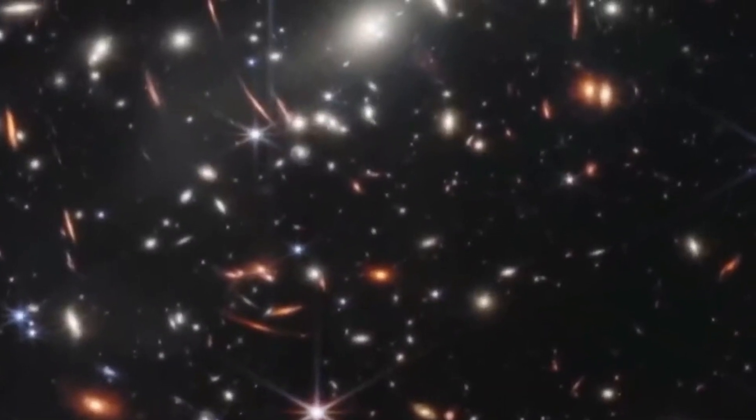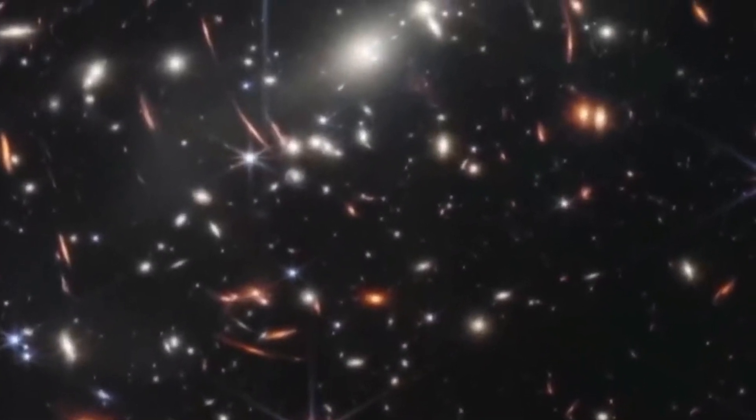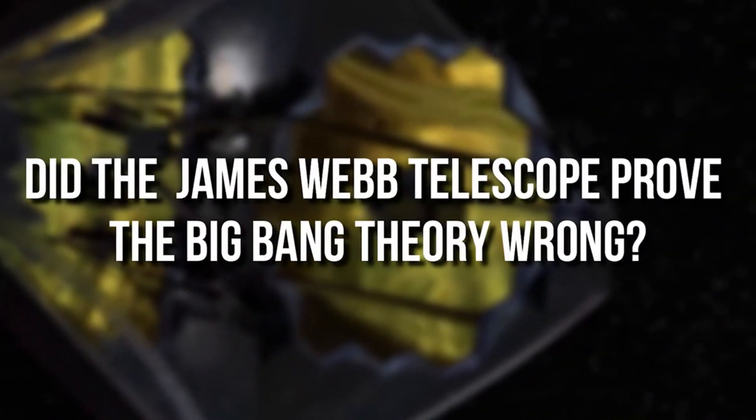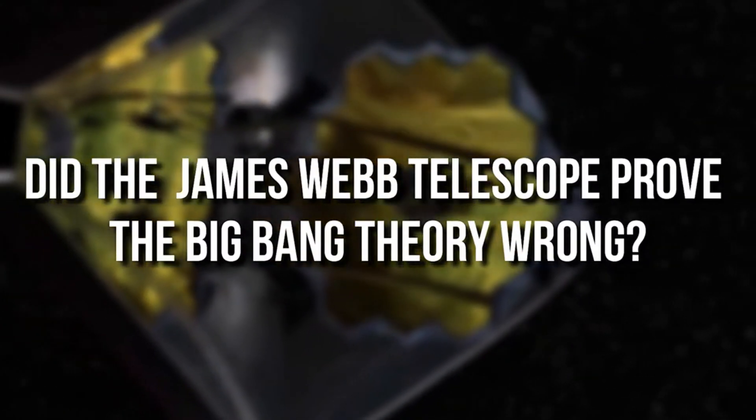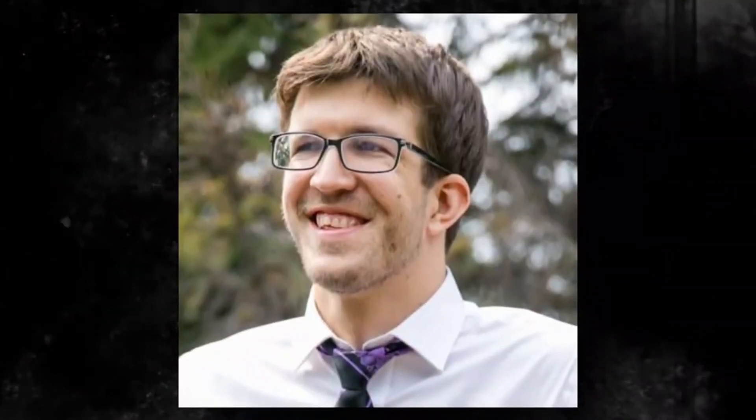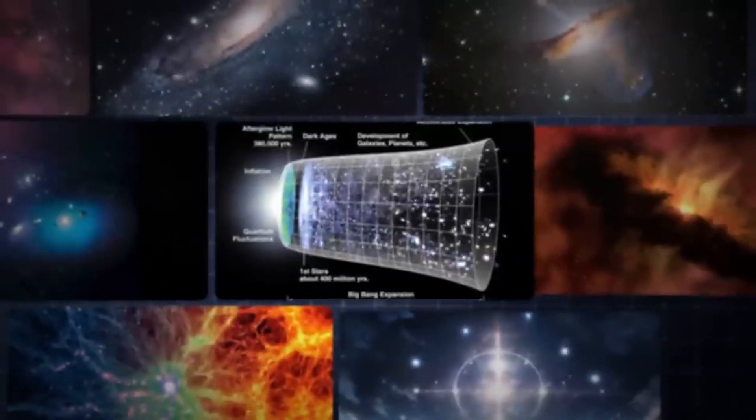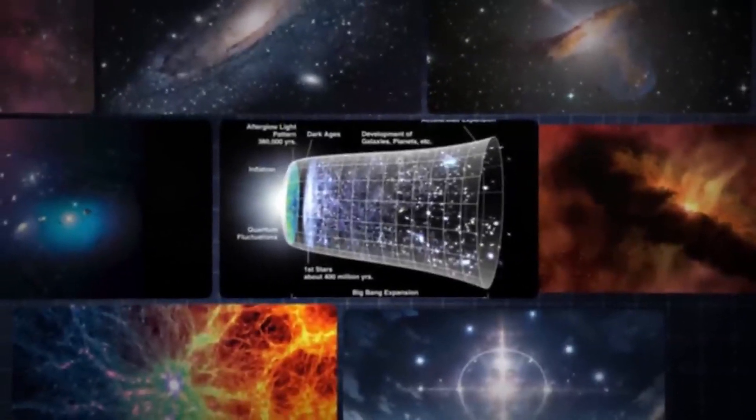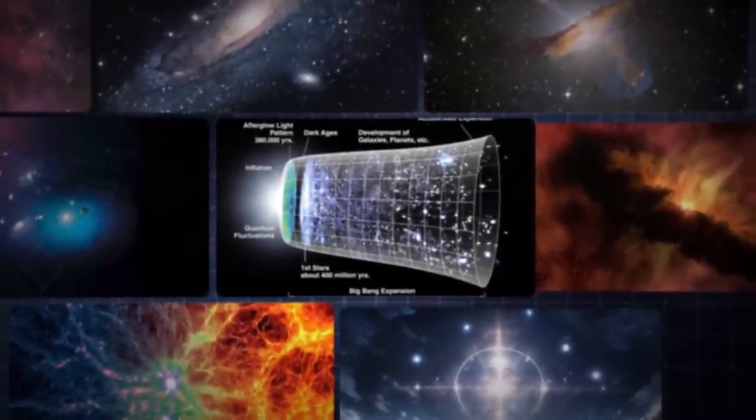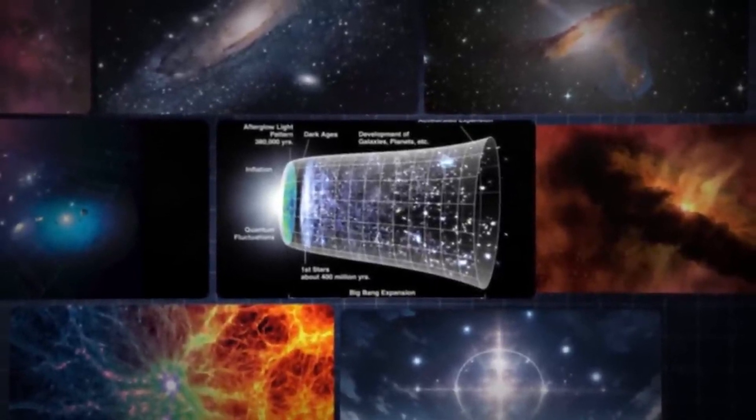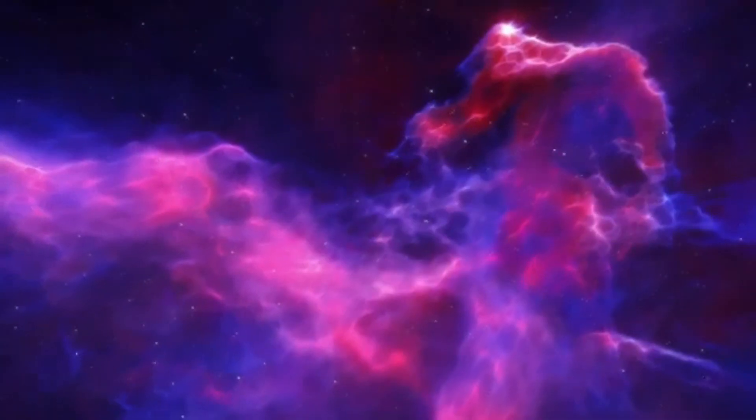Somewhere between 150 and 400 million years after the Big Bang, the universe, previously shrouded in darkness, embarked on a cosmic transformation known as reionization. Imagine this epoch as a grand awakening, where the universe began to illuminate itself, setting the stage for the emergence of galaxies, stars, and ultimately life.